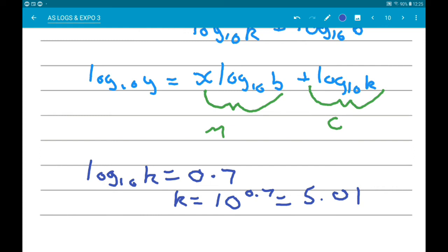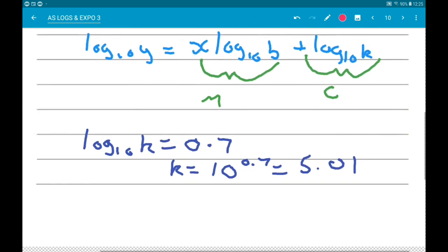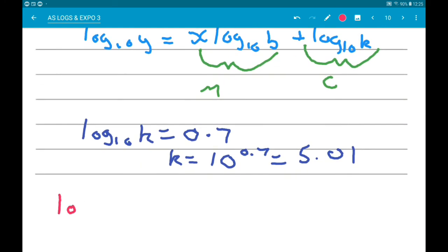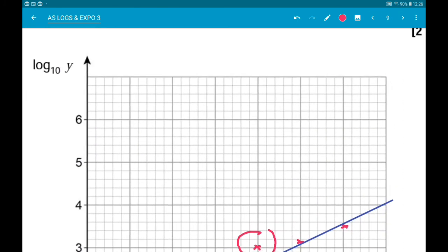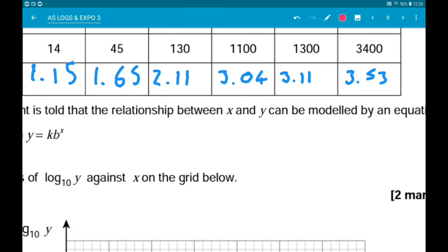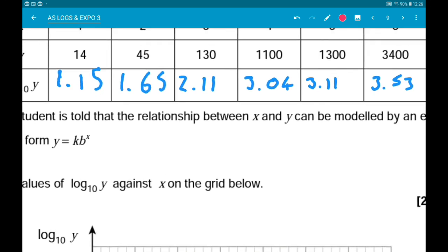Now to find b, we need to find the gradient of the line. So log10 of b. Now for the gradient of the line, I've used the two furthest away points. So when x is 1 and when x is 6. So for that... And remember, we're using the log10 y values. So that means the gradient is going to be 3.53 minus 1.15.